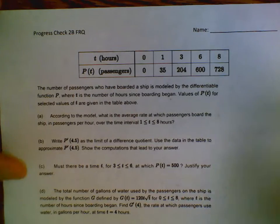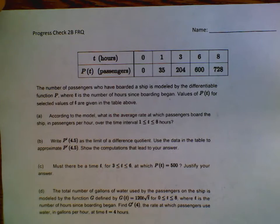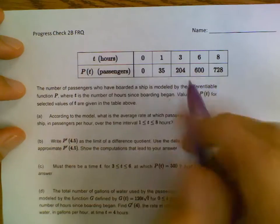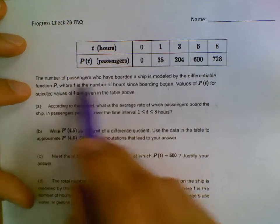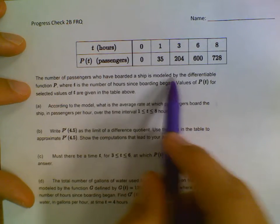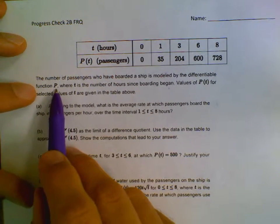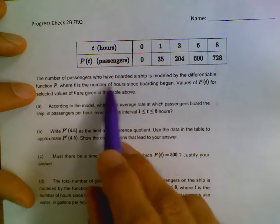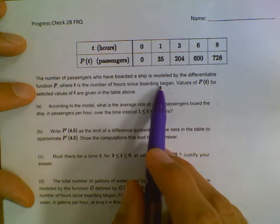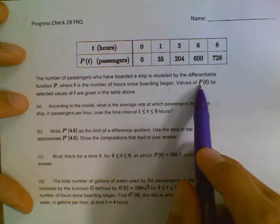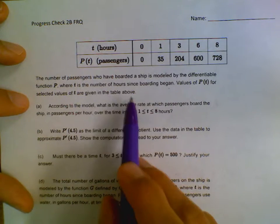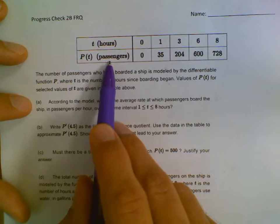All right, so this is the second part of our same assignment. We're given a table that says the number of passengers who boarded a ship is modeled by the differentiable function P, where T is the number of hours since boarding began. Values of P are given in the table below, and that's just the number of passengers.